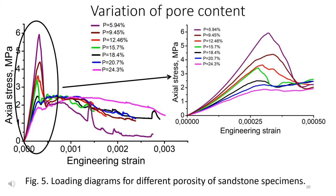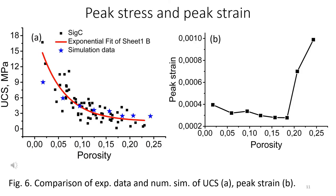Loading diagrams obtained by numerical simulation are illustrated in Figure 5 for samples with porosity varying in the range of approximately 5 to 25%. It can be concluded that the higher the porosity, the lower the uniaxial compressive strength of the sample. Comparison of obtained results with experimental data shows fairly satisfactory agreement, although at porosity exceeding 15%, the model overestimates the strength of samples.